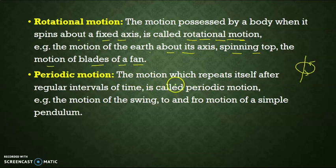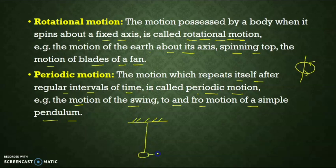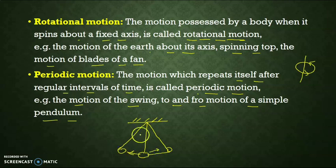Next is periodic motion. The motion which repeats itself after regular intervals of time is called periodic motion. For example, the motion of a swing, and the to-and-fro motion of a simple pendulum. A simple pendulum has a bob suspended by a string, and if we displace it, it will start to perform periodic motion, moving to and fro about its mean position. This motion is also known as simple harmonic motion. We will read this in detail in our next topic.